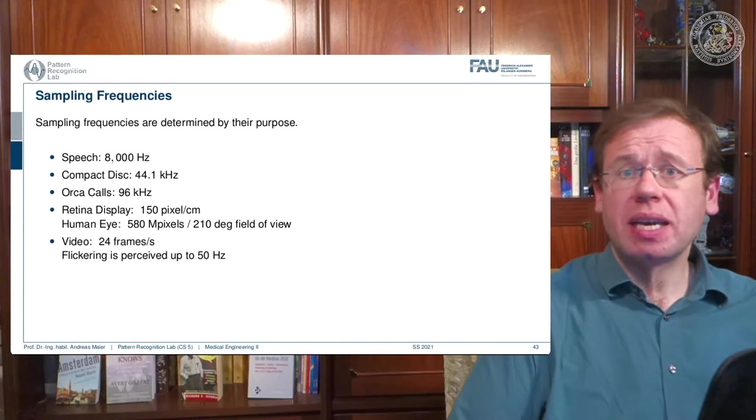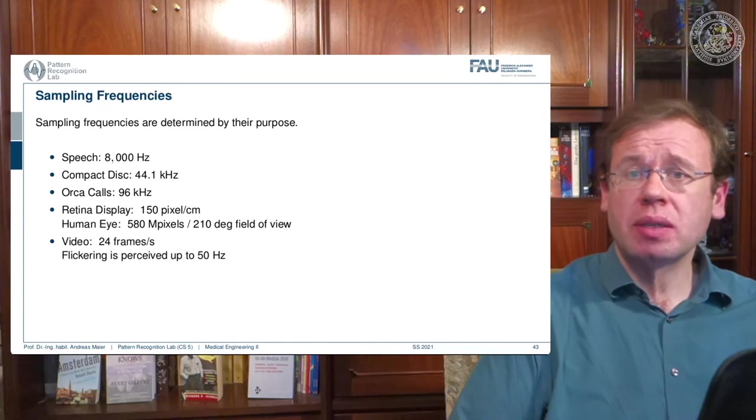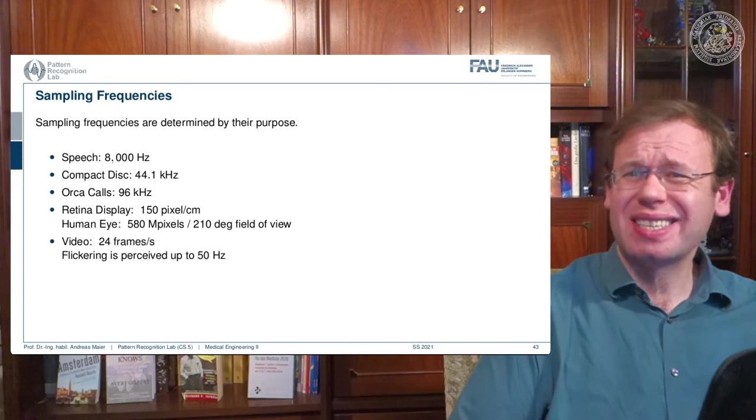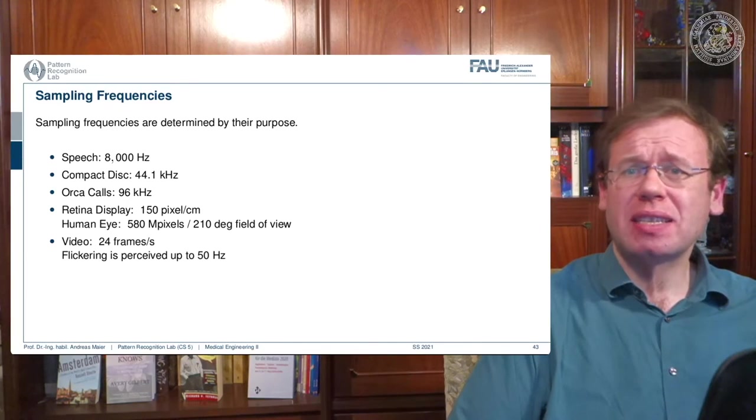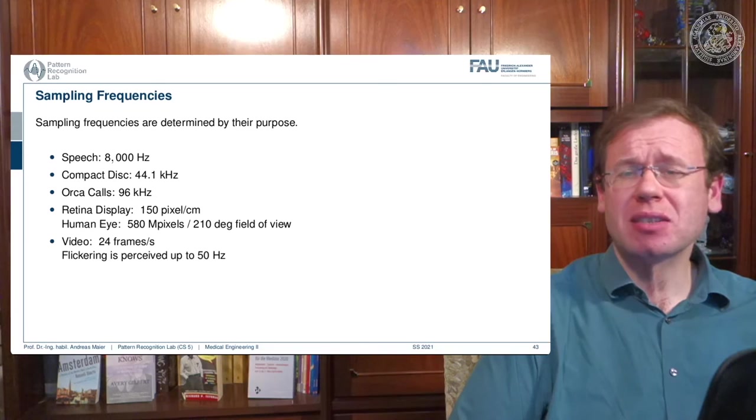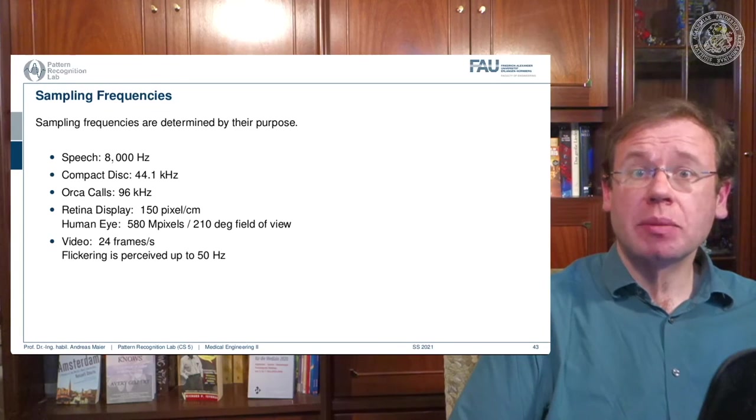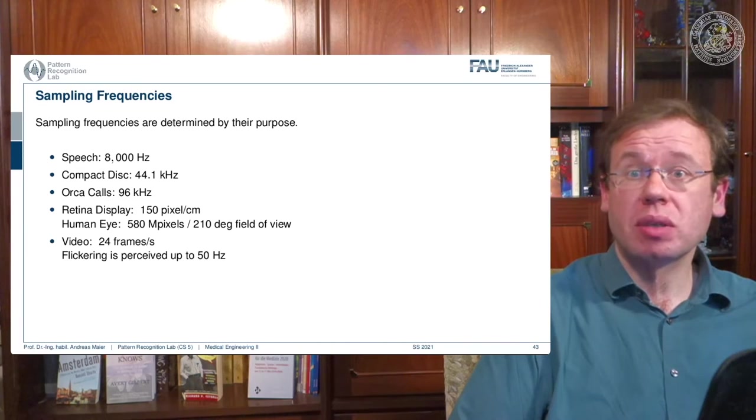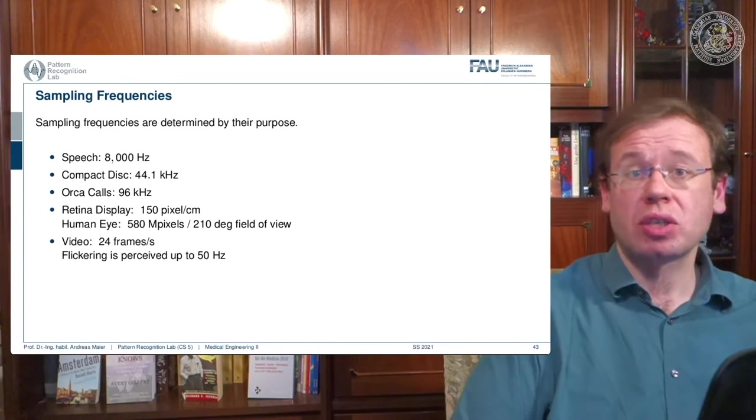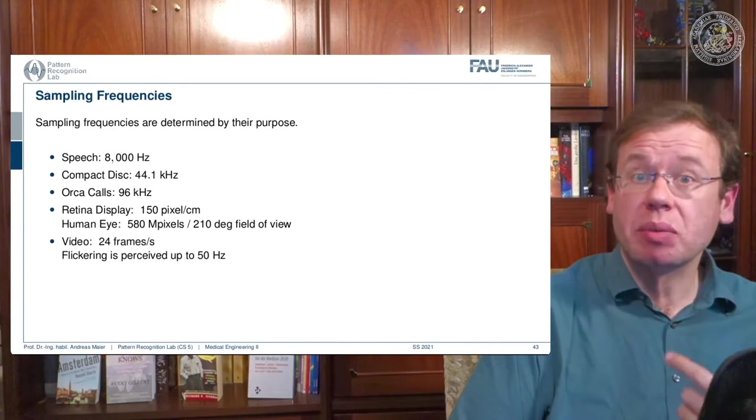Also, the vision system has frequency limits. And one is, for example, the retina display. If you heard about that, this has 150 pixels per centimeter. And this is so small that you're not able to see the individual pixels anymore. So this is why they called it the retina display, because it has essentially a resolution that is on par with the human retina.